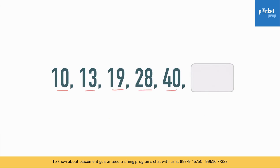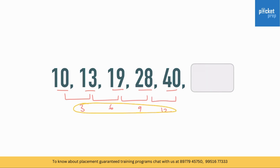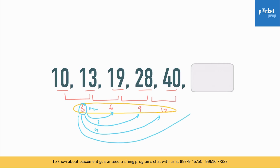One more second-level example: 10, 13, 19, 28, 40. The first-level differences are 3, 6, 9, 12. At the second level, these are multiples of 3: 3×1, 3×2, 3×3, 3×4. So the next difference should be 3×5 equals 15. Therefore the next term is 40 plus 15 equals 55.